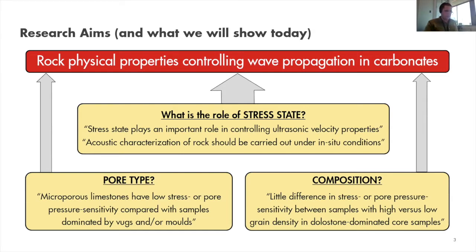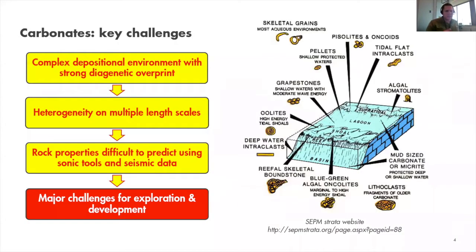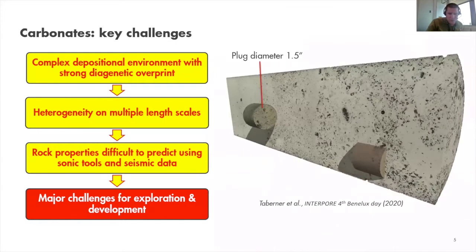As background, carbonates are characterized by a complex depositional environment and often have a strong diagenetic overprint. Therefore they show heterogeneity on multiple length scales, as shown in this core taken from a limestone reservoir. This heterogeneity in terms of porosity, mineralogy, and pore shape makes rock properties of carbonates difficult to predict using sonic tools and seismic data, offering major challenges for exploration and development.